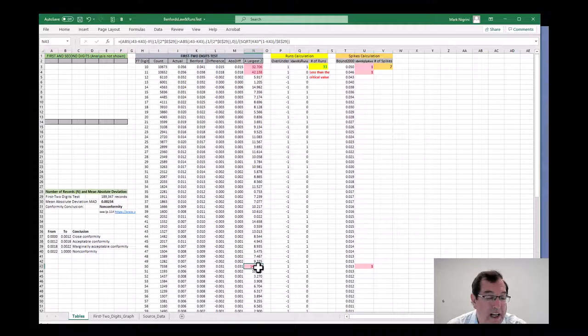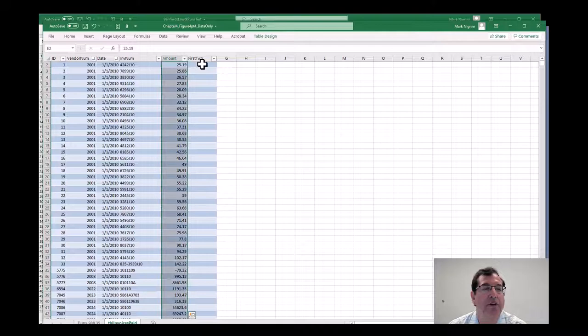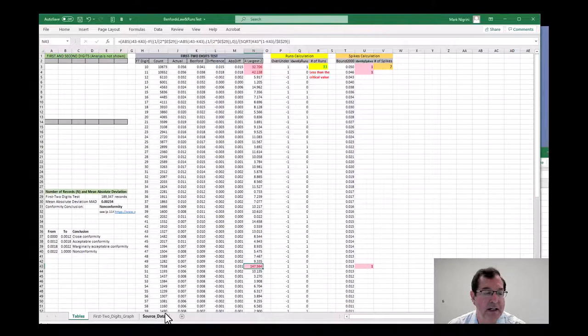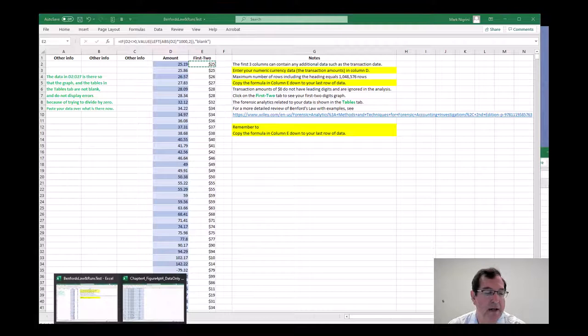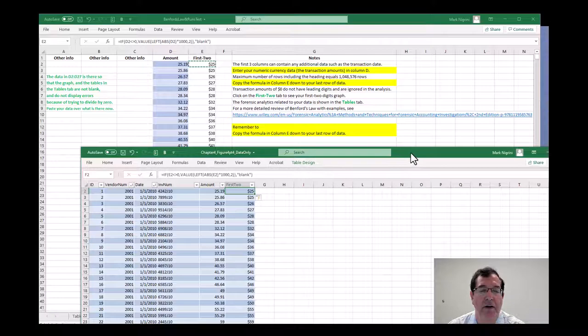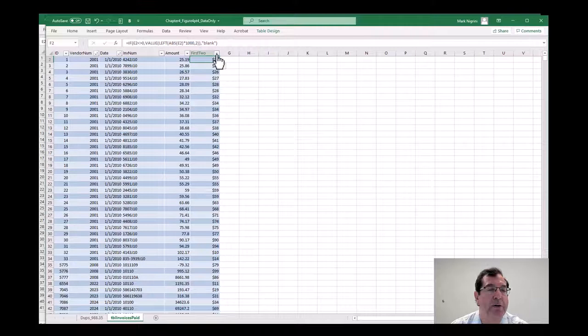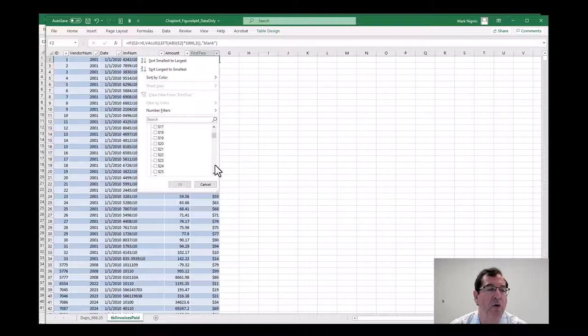What would I in fact do with this information? This is the data. I would go and now calculate the first two digits. I will now filter and extract all the records beginning with 5,0. It will be a number filter and not select all but select the 5,0. There we go.